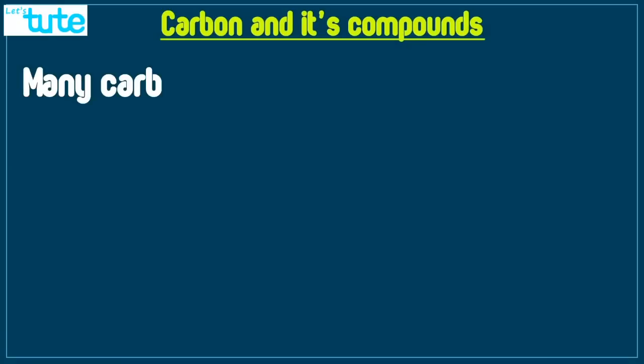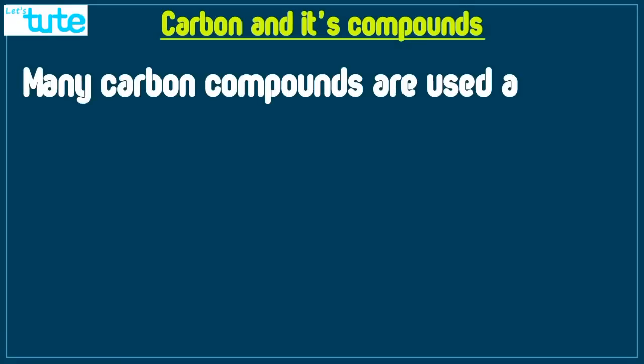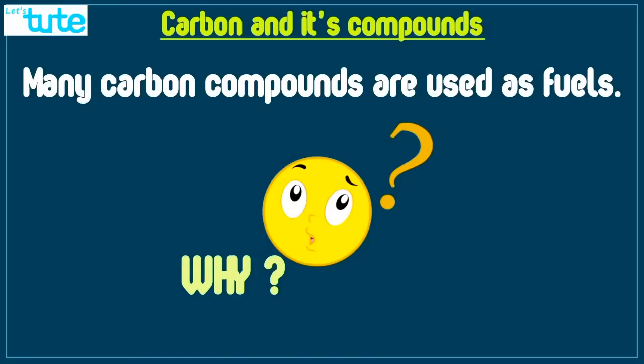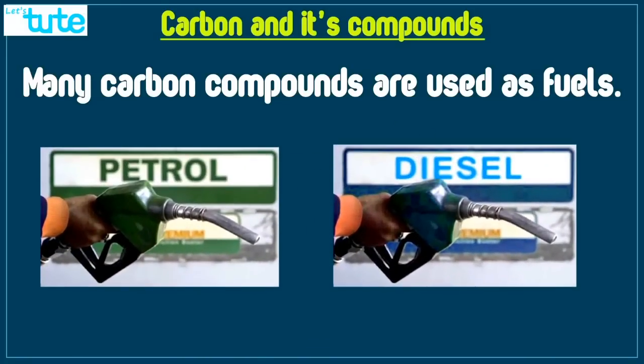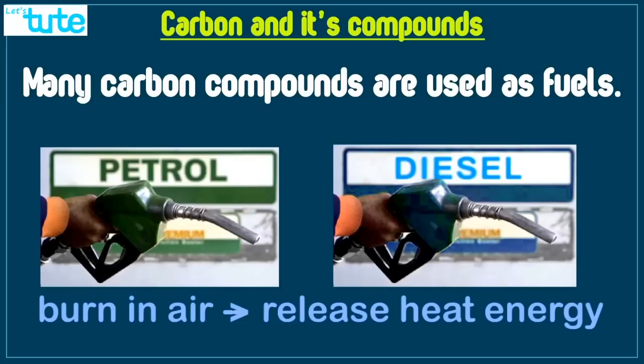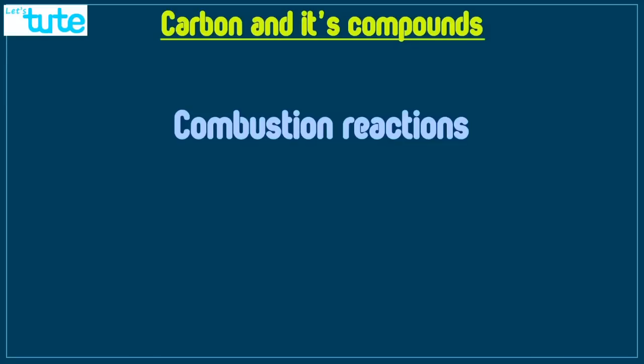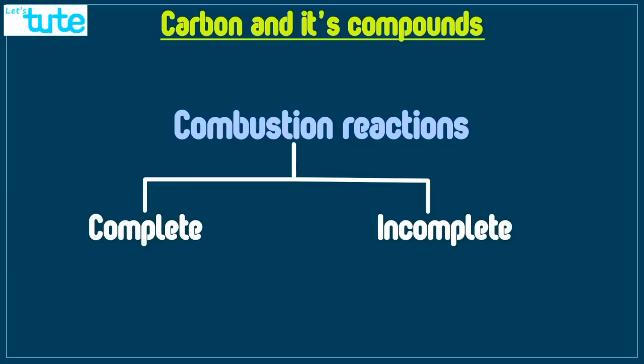Now you all must have noticed many carbon compounds are used as fuels. Carbon compounds such as petrol, diesel etc. are used as fuel because they burn in air to release lots of heat energy. Now this process of combustion can be classified into two types: complete combustion and incomplete combustion.